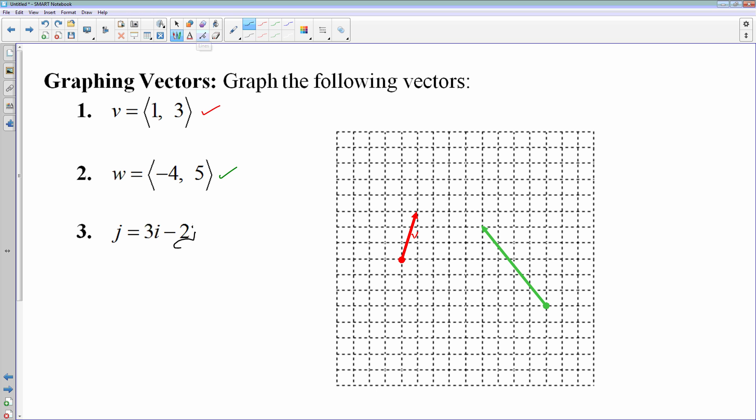And that is the same thing as the vector, if you want to write that in component form, that is 3 negative 2. Means we need to go to the right 3 and down 2. So if I'm going to graph that vector, I need to pick a point and I'll go right 2, 3, down 2. And there's our vector for number 3. So that was vector j. Alright. So that's how you graph vectors.